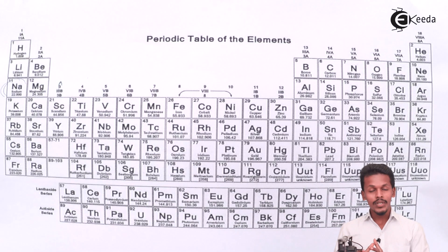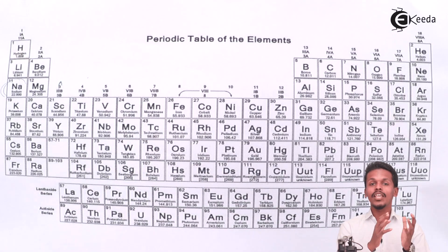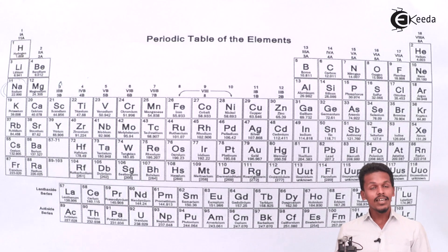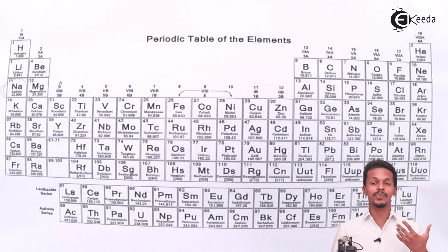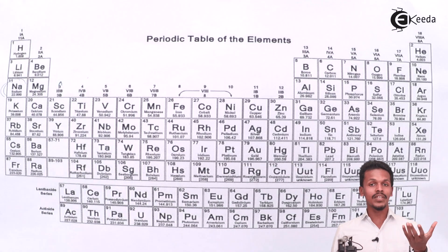So what they did is they classified these elements and tried to make groups of those elements. And that's the reason we could see that now there are basically total 118 elements that have been found or on which analysis has been done. This includes this periodic table having classification of S block elements, P block elements, D block elements, and F block elements.